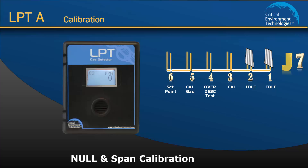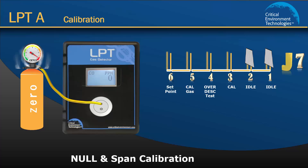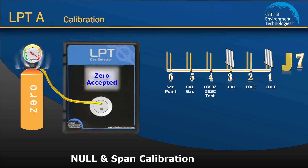To begin the null calibration, attach the regulator to the cylinder, insert the calibration adapter into the sensor opening in the front of the enclosure door and open the regulator valve fully allowing the zero gas to flow over the sensor. Move one jumper from the idle position to the cal position. The display will show calibration weighting to zero. If the reading is accepted, the message zero accepted will display and you can continue with the span gas calibration.